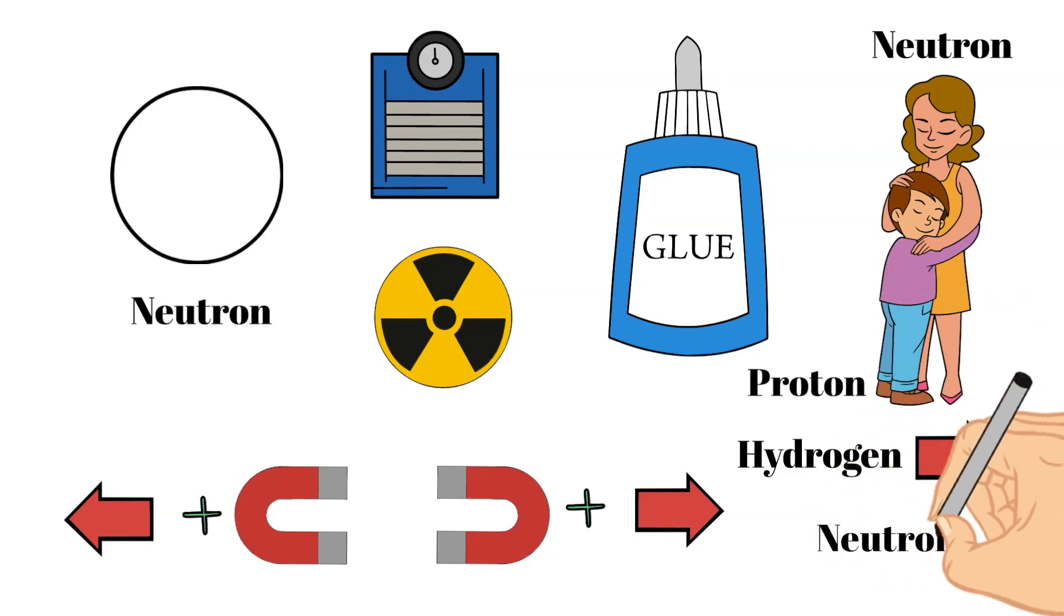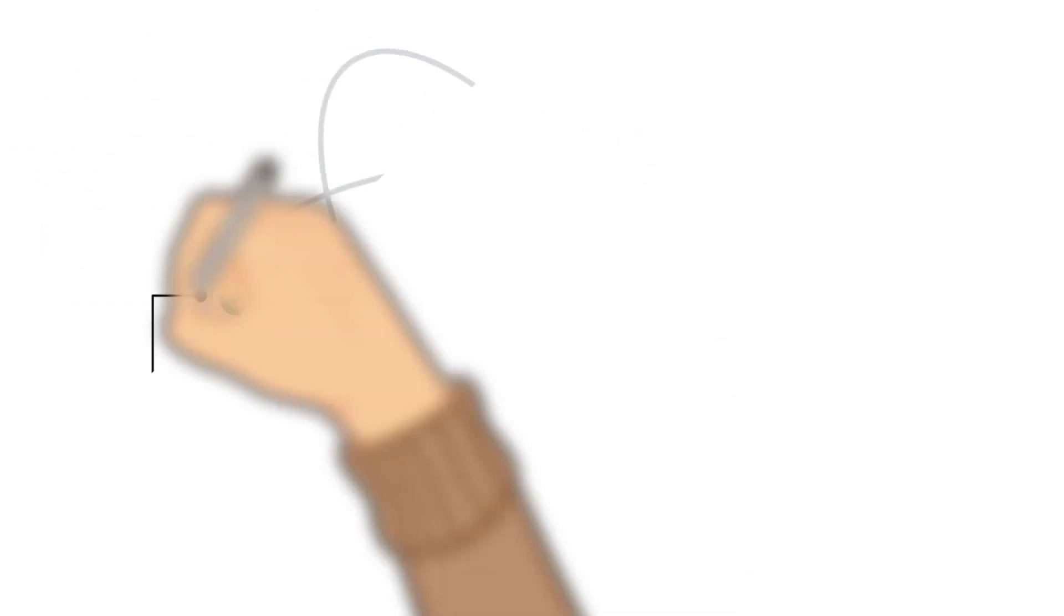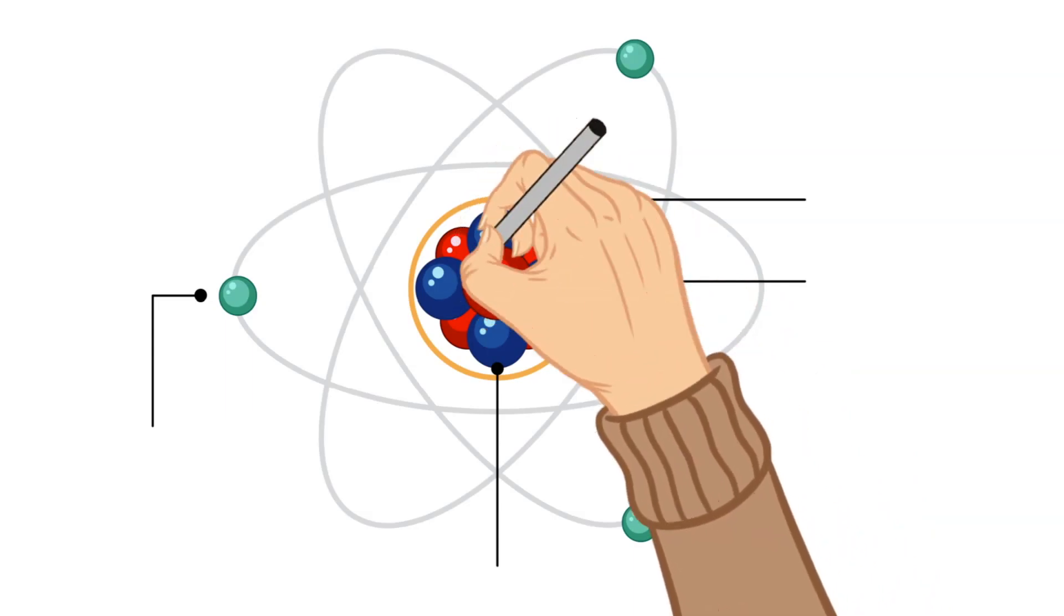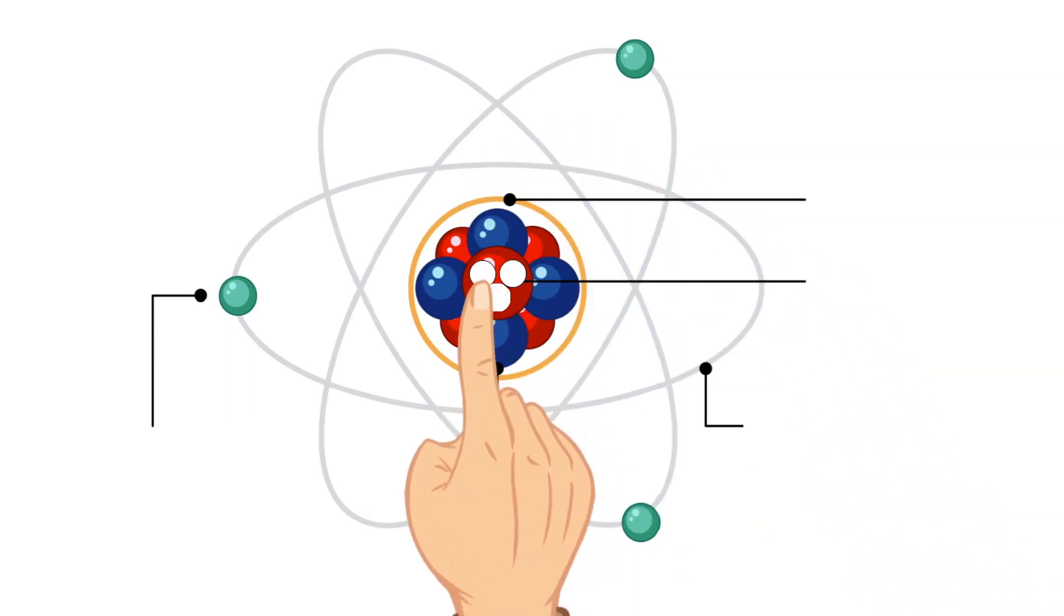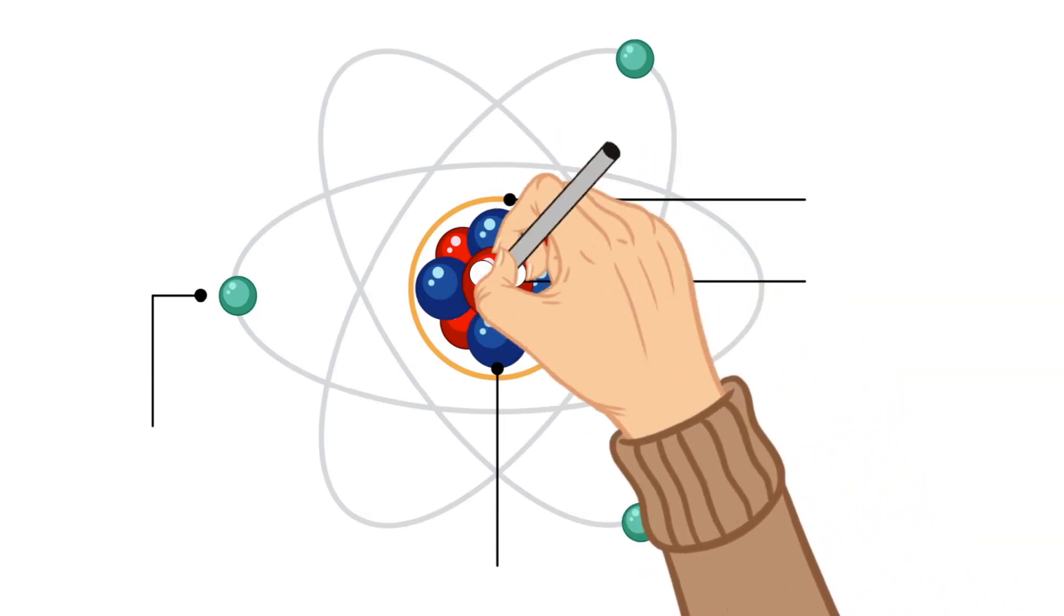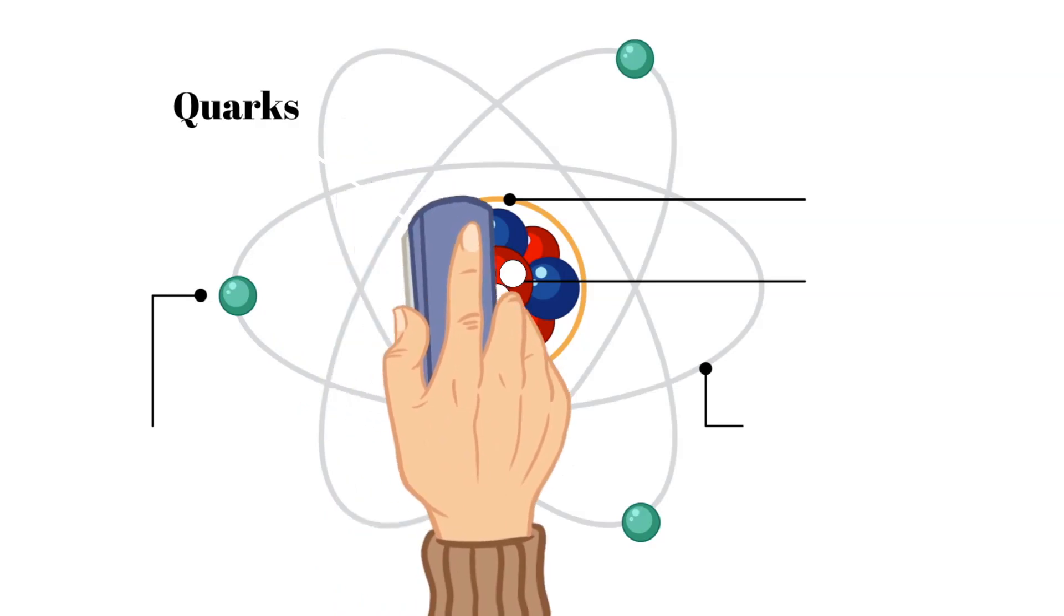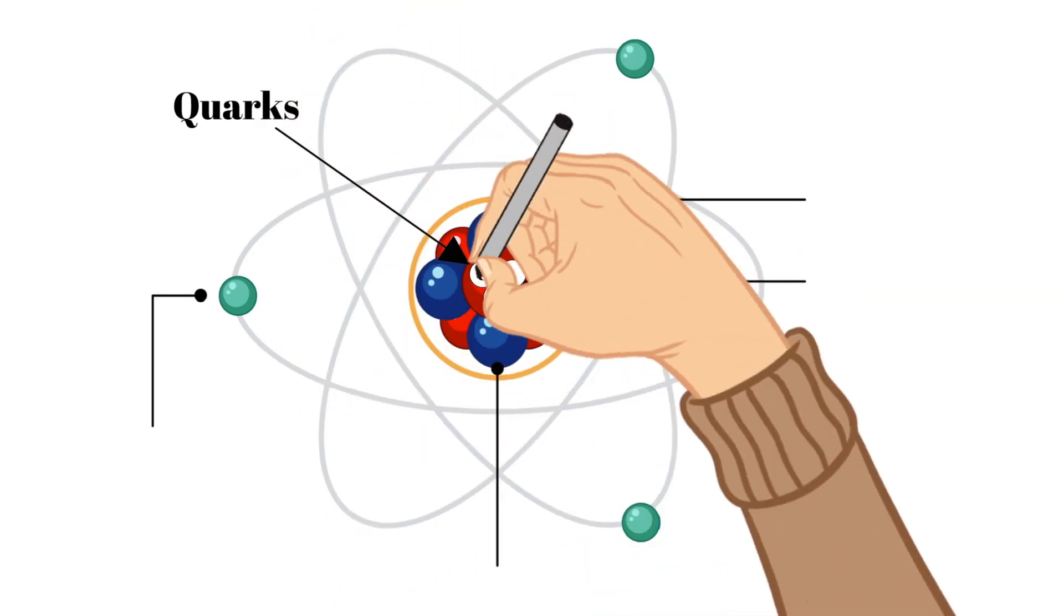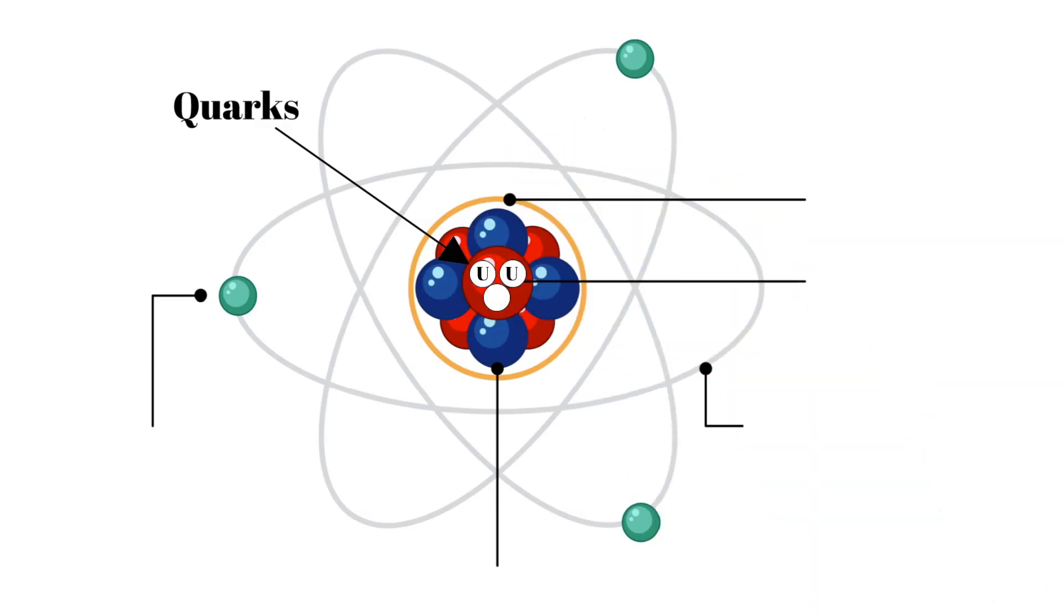Protons and neutrons are made up of even smaller particles called quarks. There are two types of quarks that can be found naturally inside these particles. They are called up quarks and down quarks. Protons are believed to be made up of three quarks total, two up and one down.